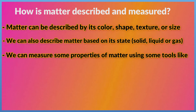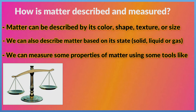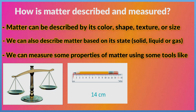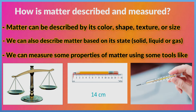We can measure some properties of matter using tools like a balance to measure its mass, a ruler to measure its length, and a thermometer to measure its temperature.